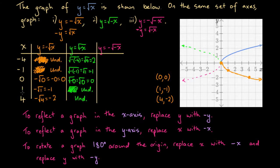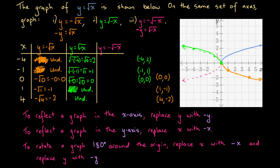So for the green function, our three points are (−4, 2), (−1, 1), and (0, 0). The point (0, 0) is the origin, (−1, 1) is one unit left and one unit up, and (−4, 2) is four units left and two units up. We've confirmed these points lie on our predicted curve, so the graph of y equals square root of minus x is the same as the blue graph reflected in the y-axis.